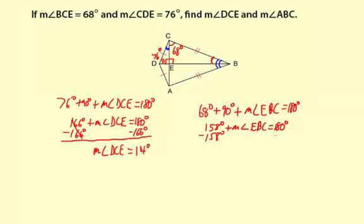180 degrees minus 158 degrees, which is 22 degrees. Now that measure of angle EBC, that's only half of measure of angle ABC. So the measure of angle ABC is 2 times 22 degrees, which is 44 degrees.